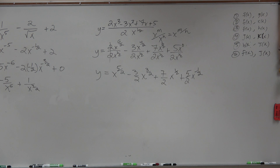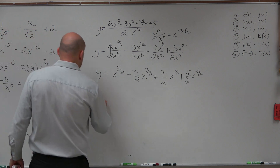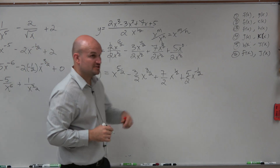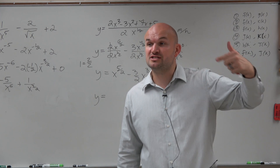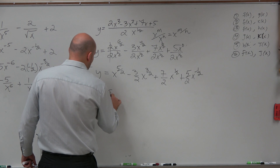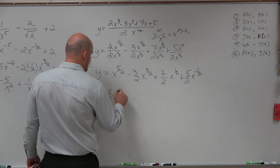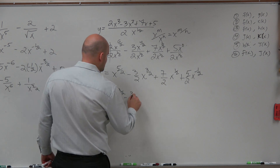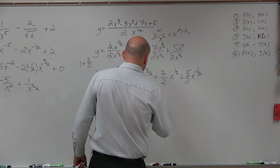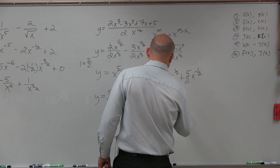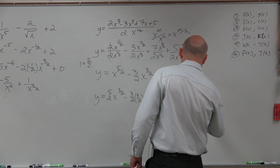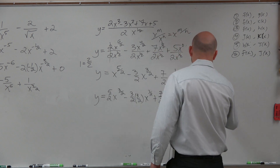Now we have our function — bring it down, change it down. So y prime equals... remember, 1 is equivalent to 2 over 2, so when subtracting 1 from the exponent, I'm really subtracting 2 over 2, because these are all fractions with a base of 2. So I get: 5 halves times x to the 3 halves, minus 3 halves times 3 halves times x to the 1 half, plus 7 halves times 1 half times x to the negative 1 half, plus 5 halves times negative 1 half times x to the negative 3 halves.